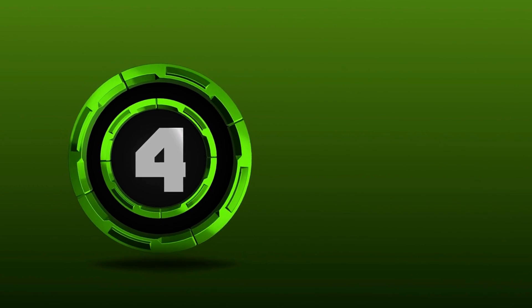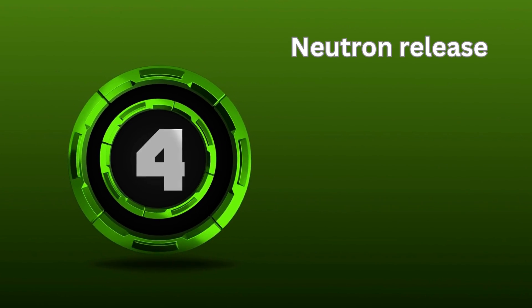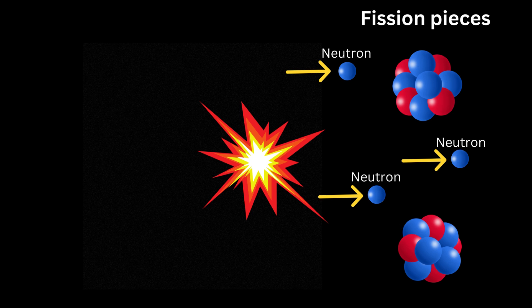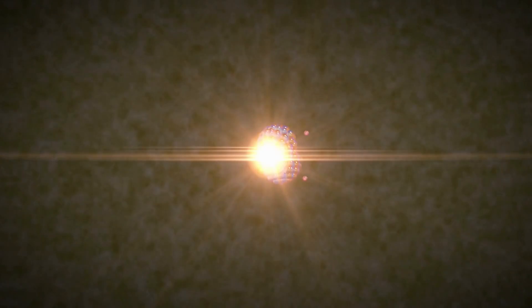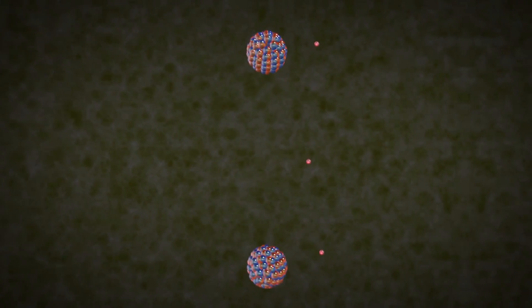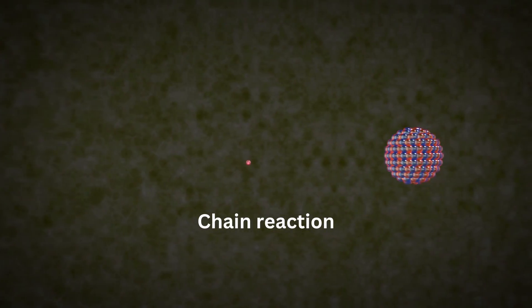Step 4: Neutron release. Two or three neutrons are also released along with the fission pieces. These neutrons can trigger more fission processes and start a chain reaction because they normally have high energy.